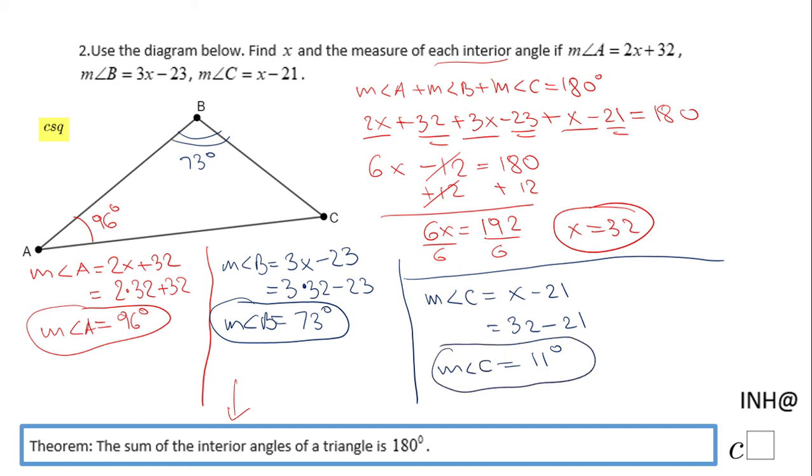So the measure of angle C is 11°. Still a triangle, it's going to be an obtuse triangle, very interesting triangle if you try to draw this triangle with these three angles. If you enjoyed this video clip, don't forget to click the like button and come back on C Square for more help. Thank you.